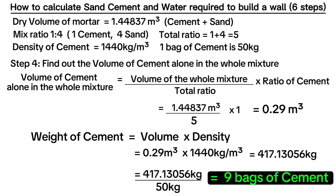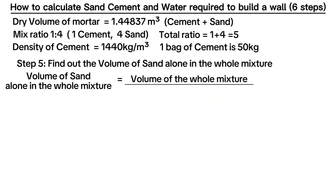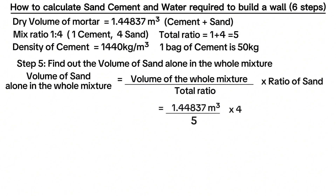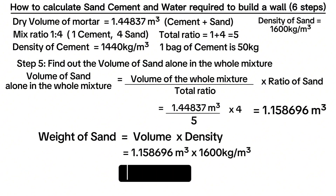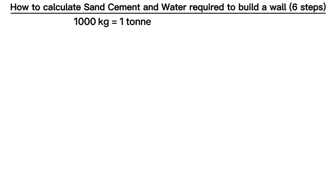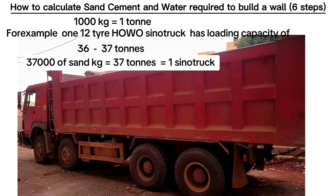Therefore, when building a wall of 10 meters along its length and 3 meters along its height, you buy 9 bags of cement. The fifth step is to find out the volume of sand alone in the whole mixture. Sand takes 4 parts out of 5. Volume of sand is equal to volume of the whole mixture divided by total ratio, multiplied by the ratio of sand, giving 1.158696 meters cubed. Considering the density of sand as 1,600 kg/m³, the total weight of sand is 1,854 kilograms. After making your calculation in kilograms, note that 1,000 kilograms equals 1 ton. Different trucks have different loading capacities — for example, a 12-tire Sino truck carries around 36 to 37 tons.